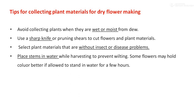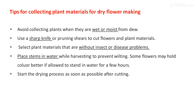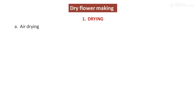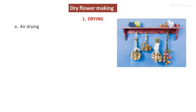Place stems in water while harvesting to prevent wilting — some flowers hold color better if allowed to stand in water for a few hours. We need to maintain the same form in dried condition as well. Start the drying process as soon as possible after cutting. The first and simplest method of drying is air drying, where flower stems are simply hung up.